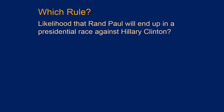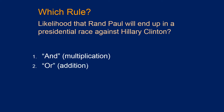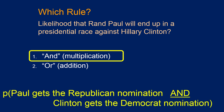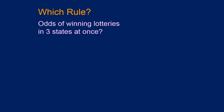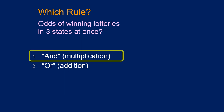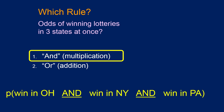What's the likelihood that Rand Paul ends up in a presidential race against Hillary Clinton? You'd use AND — it's the probability that Rand Paul is the Republican nominee AND Hillary Clinton is the Democratic nominee. What are the odds of winning lotteries in three states at once? Also AND — it's the probability of winning in Ohio AND New York AND Pennsylvania.